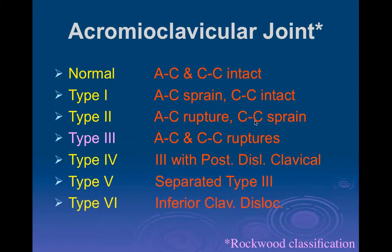Let's talk about acromioclavicular joint disease. The classic Rockwood classification is universally used and I do typically use it in reports, though most now acknowledge its limitations. Type 3 may or may not require surgery — in this day and age, most are treated conservatively. Types 4, 5, and 6 are all surgical lesions.